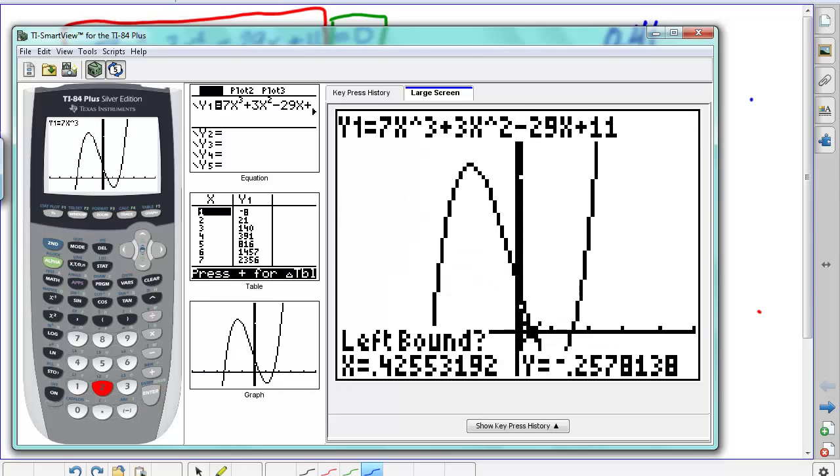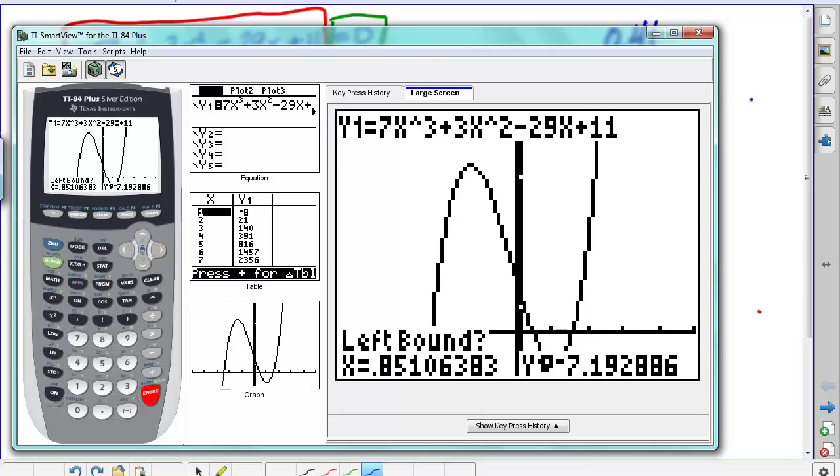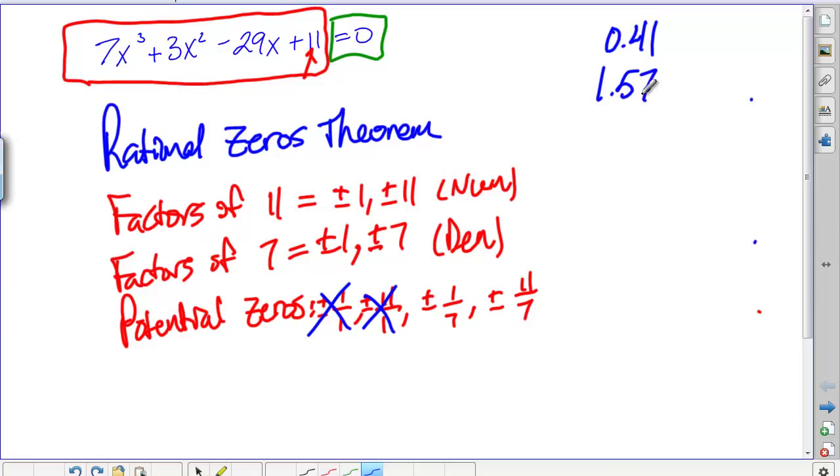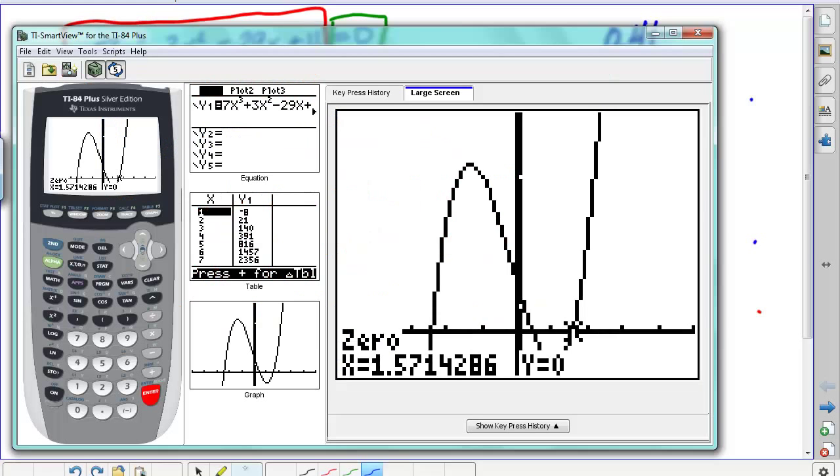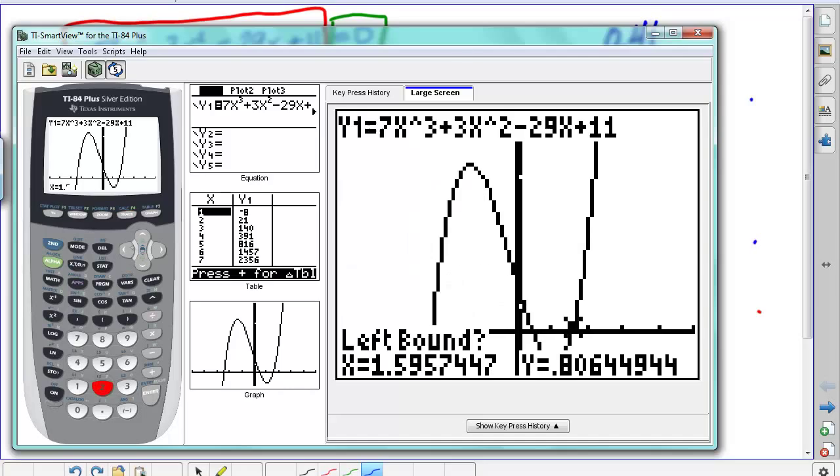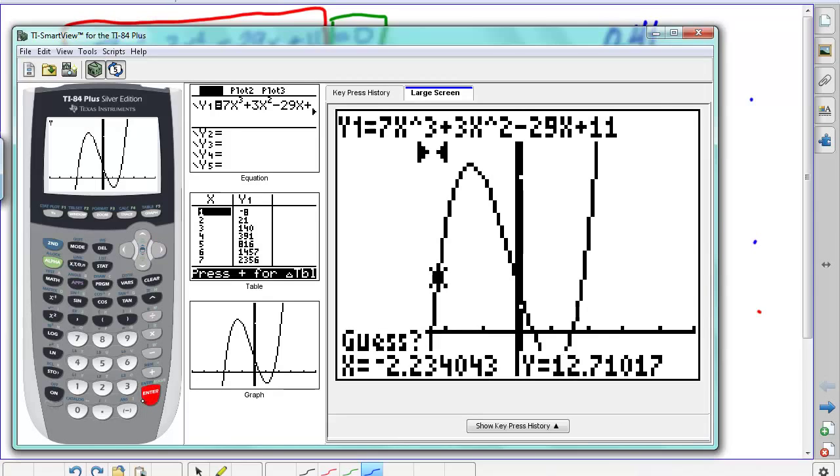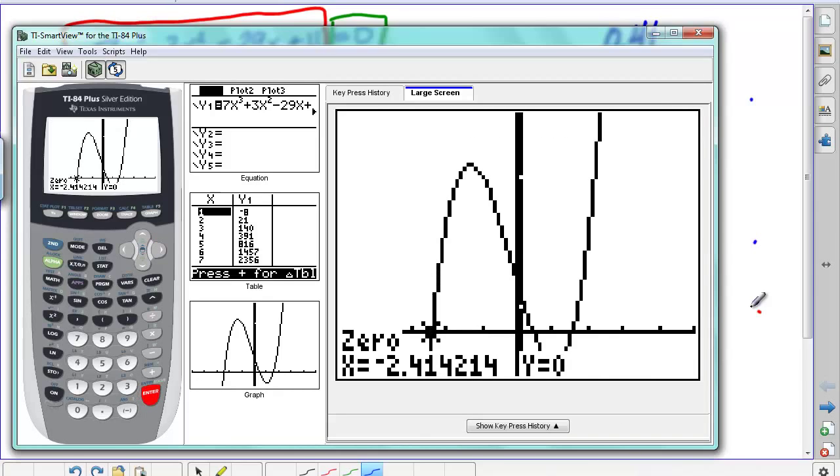So let's do that again, let's get all three of these. 1.57, and let's go all the way to the left, this last one, and then let's go to the right, and we get negative 2.41.